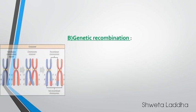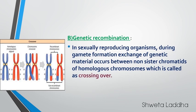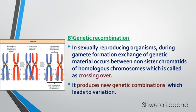The second factor is genetic recombination. It occurs in sexually reproducing organisms during gamete formation. When meiosis occurs, during meiosis 1, in prophase 1 — leptotene, pachytene — crossing over occurs, and crossing over results in recombination. When recombination occurs, it produces new genetic combinations which will obviously lead to variation.